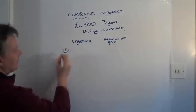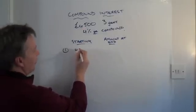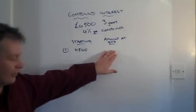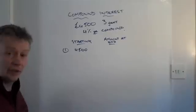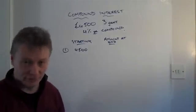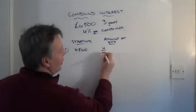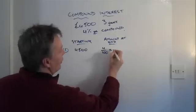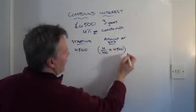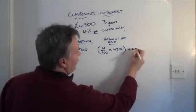Okay, so the first year Joe starts with £4,500. And then at the end of the first year he's got £4,500 plus 4% of £4,500.